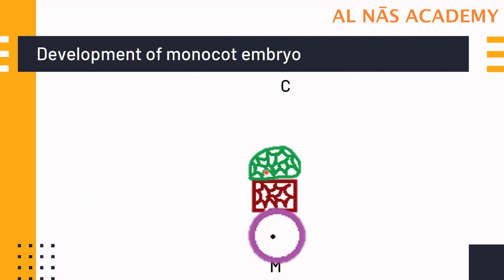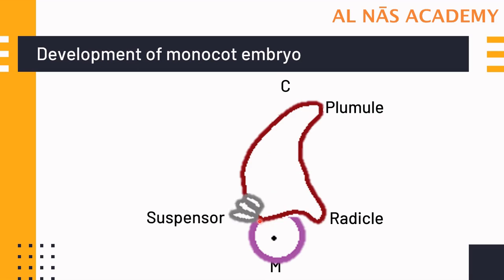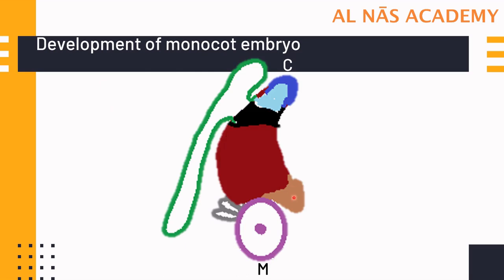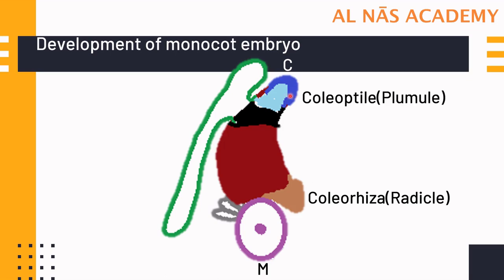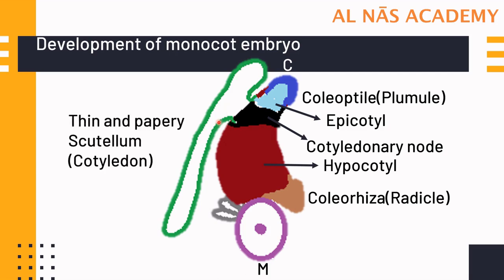The basal cell remains circular and large; the middle cell gives rise to radicle and plumule; attached to the basal cell is the suspensor. The suspensor in monocot is not as large as in dicot. The radicle is covered by a sheath called coleorrhiza; the plumule is covered by a sheath called coleoptile. The part between the cotyledonary node and coleoptile is the epicotyl; between the cotyledonary node and coleorrhiza is the hypocotyl. In monocots, especially grasses, the cotyledon is thin and papery and is termed the scutellum.